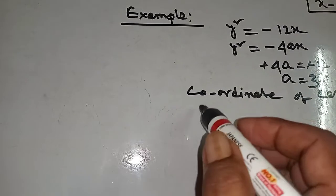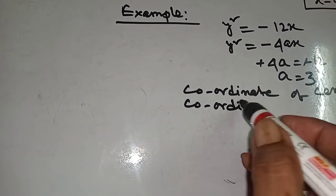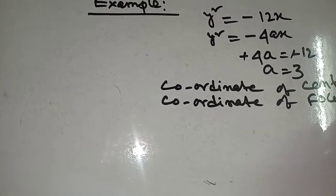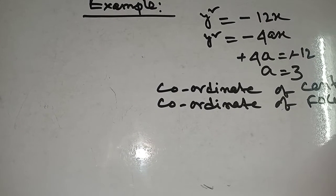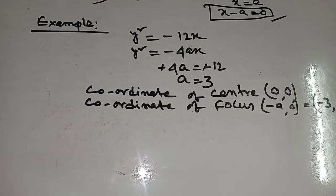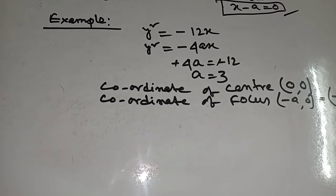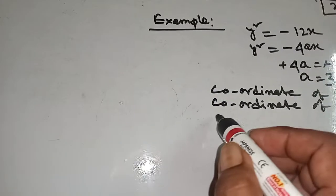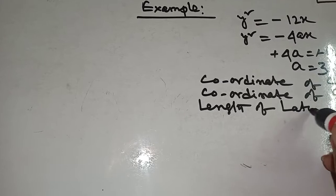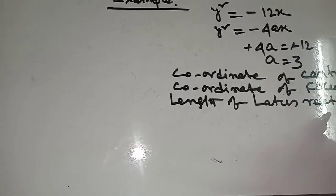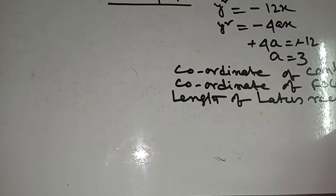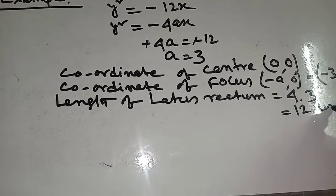Now write the formula for this. Coordinate of center: 0, 0. Coordinate of focus: minus a comma 0, so minus 3 comma 0, because the value of a is 3. Length of latus rectum: 4a equal to 4 into 3 equal to 12 units.